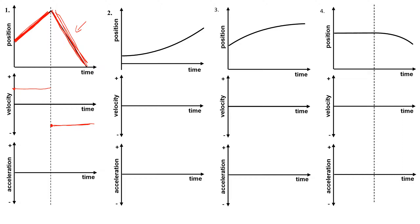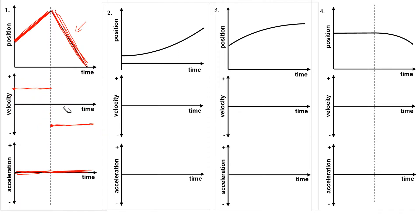For both of these motions, there is no slope to the velocity, so that means there is no acceleration — I'd put a line at zero for both. To describe this motion: first the object is moving in the positive direction with a constant velocity, then it turns around and moves in the negative direction with a little bit more speed, and also constant velocity.